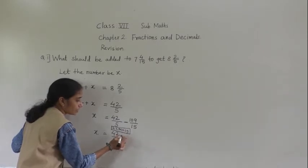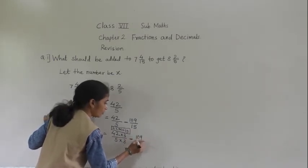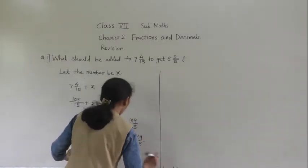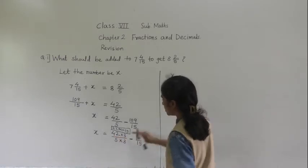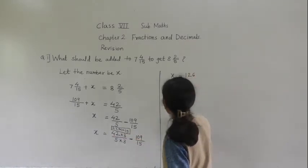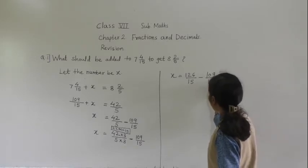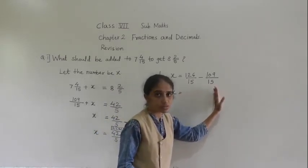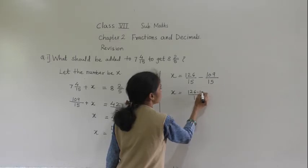So x equals 42 upon 5 — we have to make the denominator 15. 5 threes are 15, so multiply numerator also by 3, giving 126 upon 15. Minus 109 upon 15 — denominator is already 15, no need to multiply. Now denominators are the same, so we can subtract the numerators: 126 minus 109.